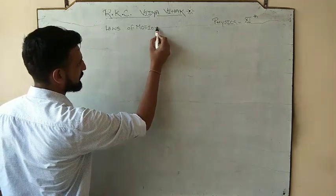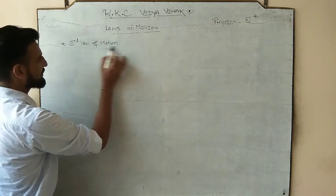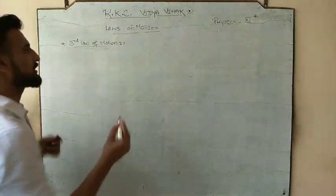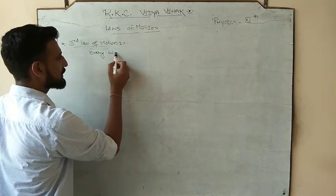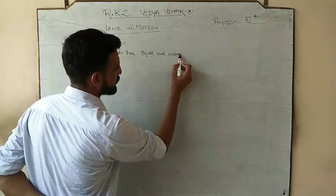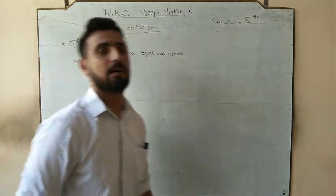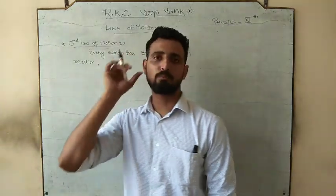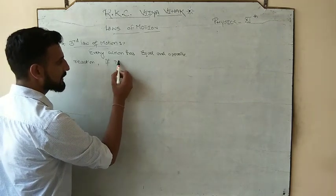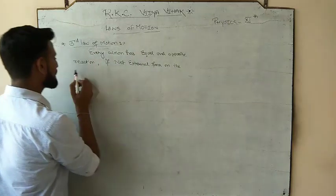The thing we have to study is the third law of motion — this is my favorite law. What does the third law of motion say? Every action has an equal and opposite reaction. But one important condition is: every action has an equal and opposite reaction only if the net external force on the system is zero.